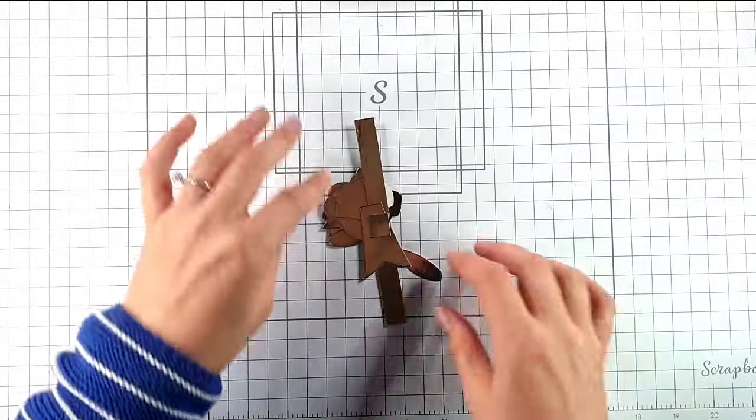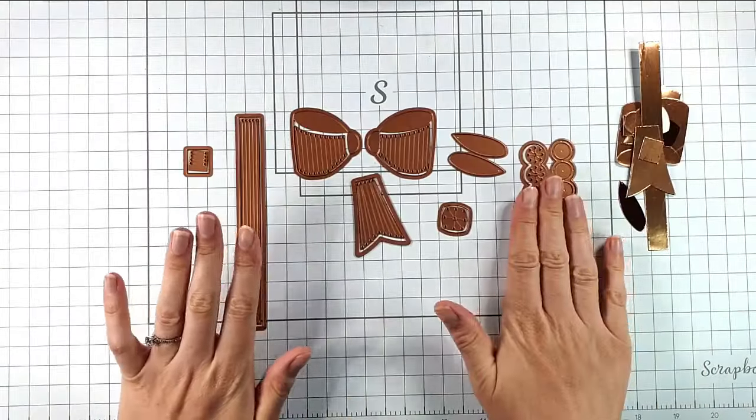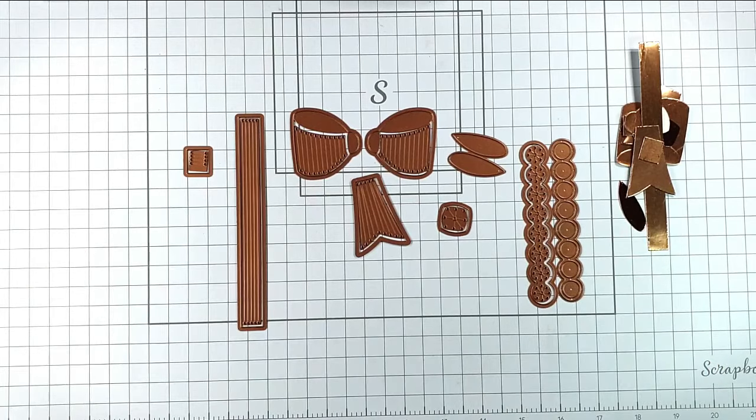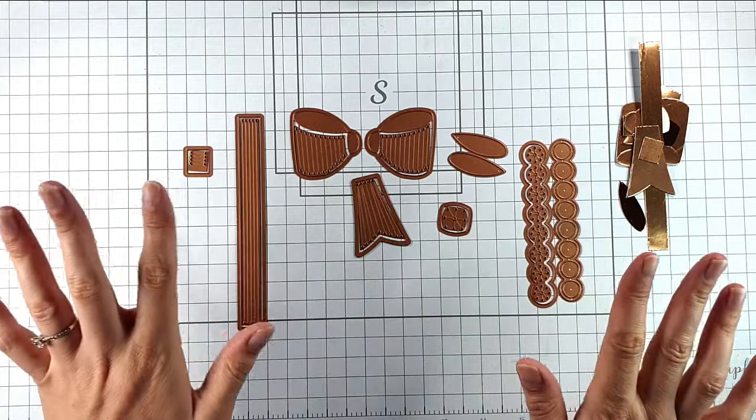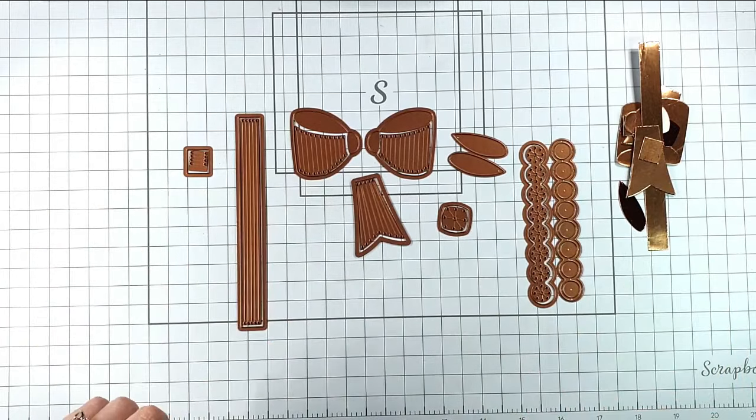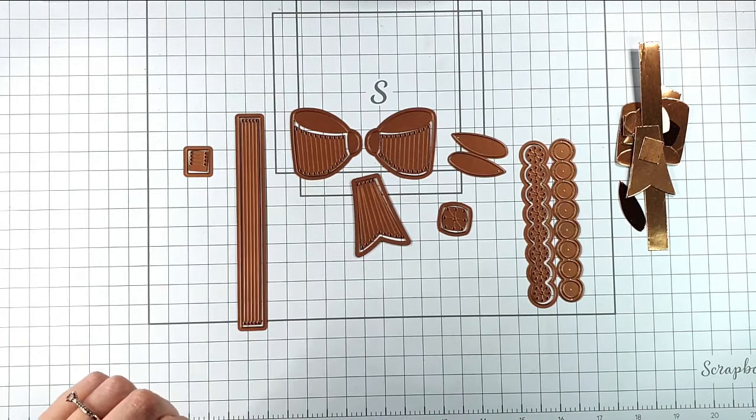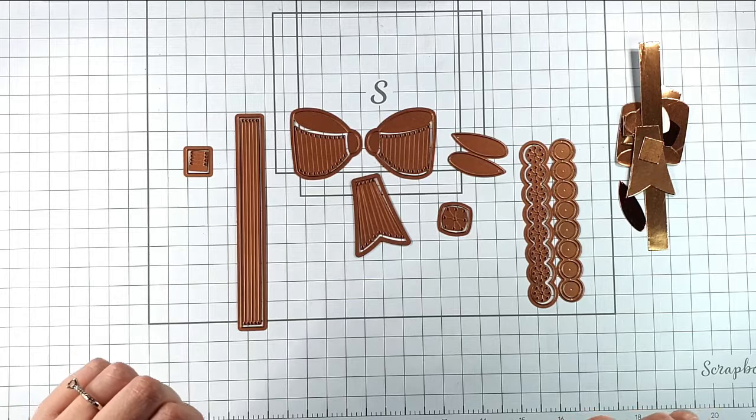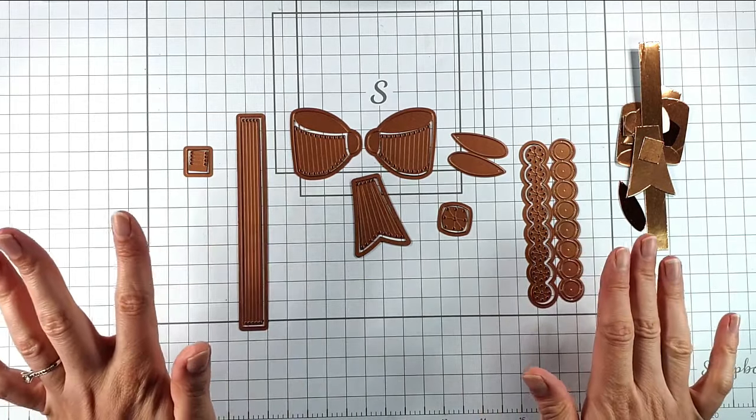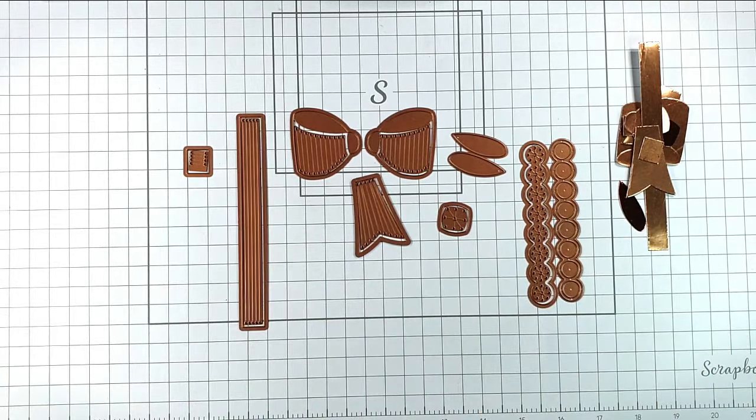So this large bow die is the stitching die of the month from Spellbinders, and I think this one is absolutely gorgeous. So let me talk you through it, and then we're going to make the bow. We're not going to do any stitching today, but I will have a video for you in a couple of weeks where I'm going to do the stitching on it. But I think this is so versatile because you can basically create a quick card for anything where you would be giving a present: birthdays, anniversaries, Christmas, anything you can think of really.